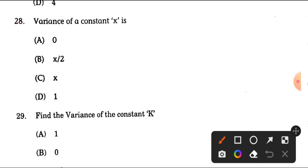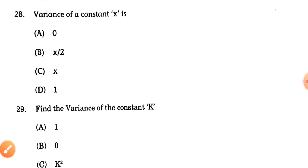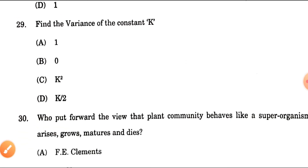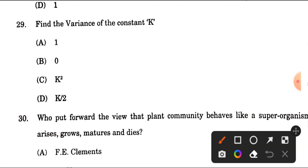Question number 28: Variance of a constant x is what? The variance of a constant is always 0. Question number 29: Find the variance of the constant k. Again the answer is 0, because k is a constant.